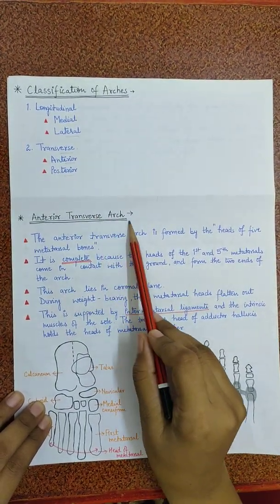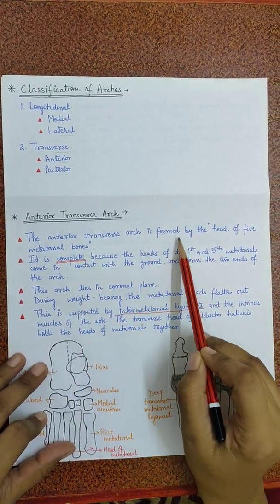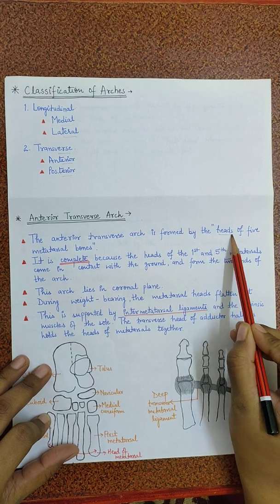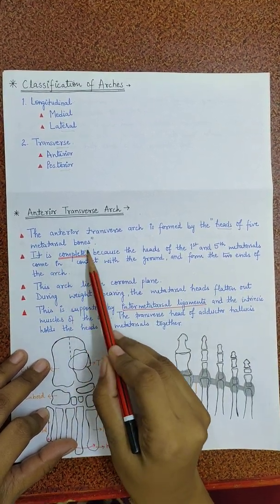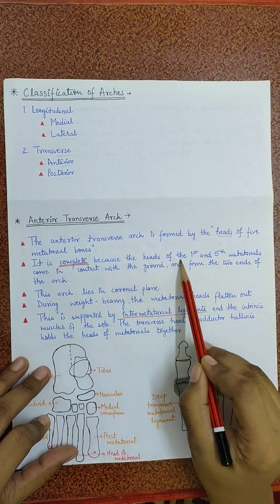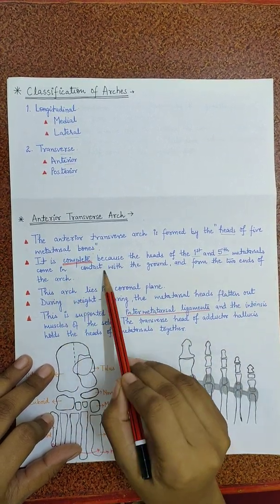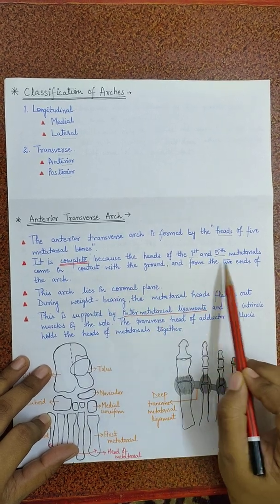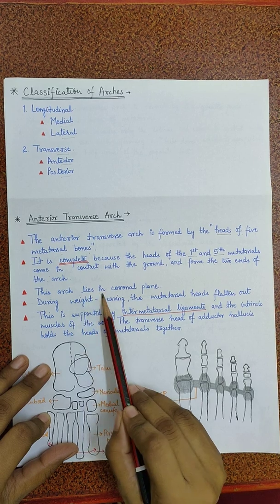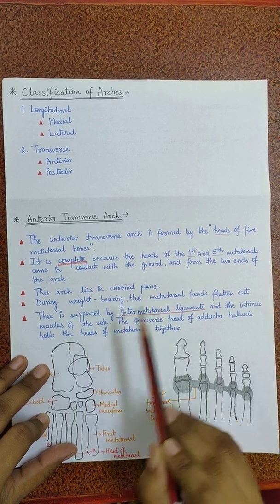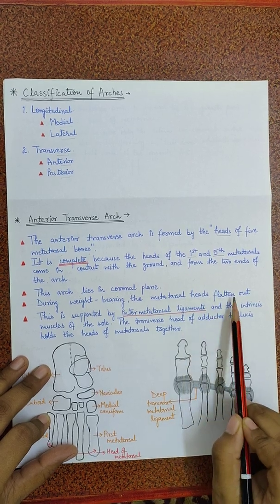Now we will see the anterior transverse arch. The anterior transverse arch is formed by the heads of five metatarsal bones. It is a complete arch because the heads of the first and the fifth metatarsals come in contact with the ground and they form the two ends of the arch. This arch lies in the coronal plane. During the weight bearing, the metatarsal heads flatten out.